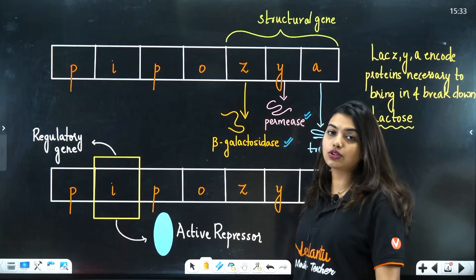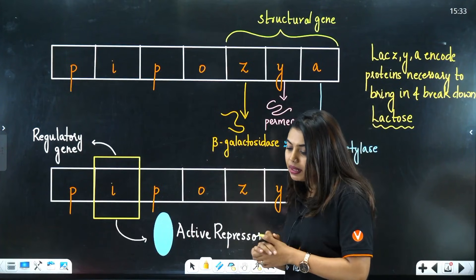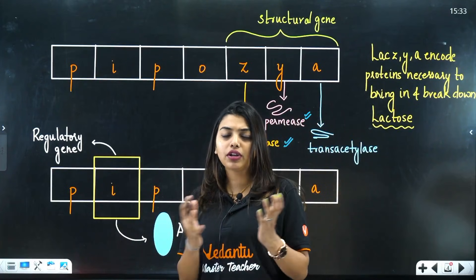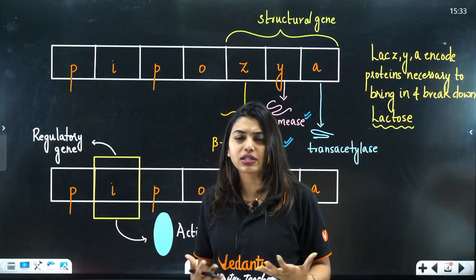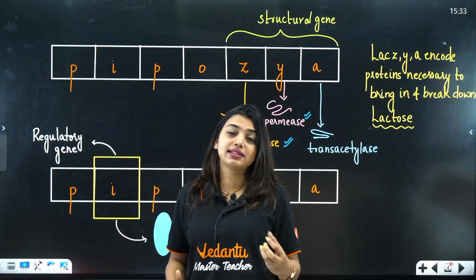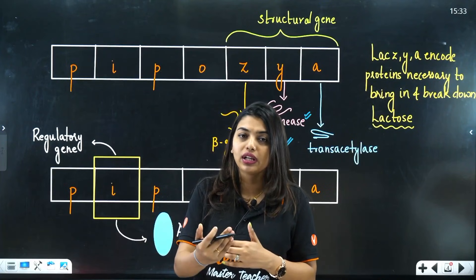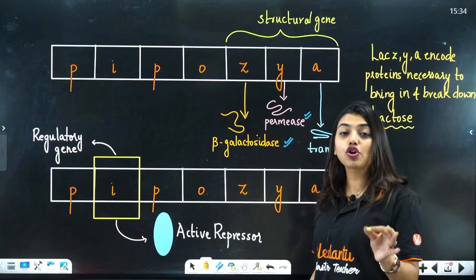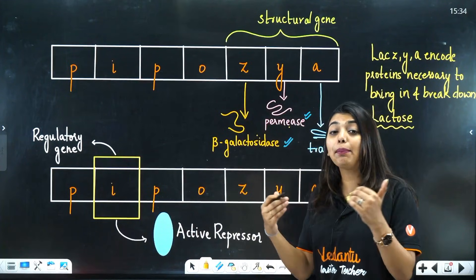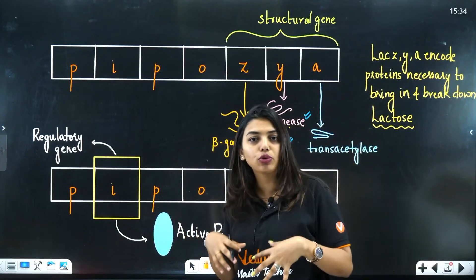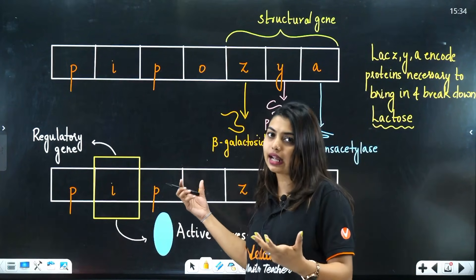First, beta-galactosidase breaks down lactose into galactose and glucose. In a prokaryotic bacterium, when glucose is available, there is no need for lactose — but when glucose is low and lactose is present, E. coli will take it in. Permease increases the permeability of the cell wall so E. coli can absorb more lactose. Transacetylase has no specific function mentioned in NCERT but enhances beta-galactosidase activity.